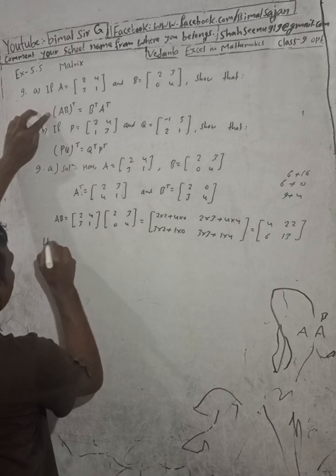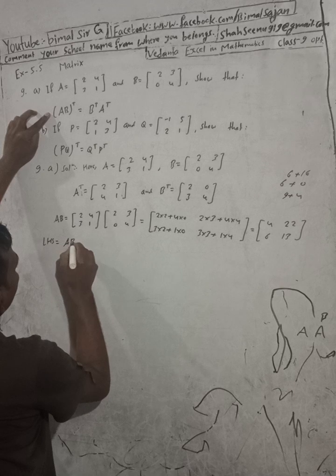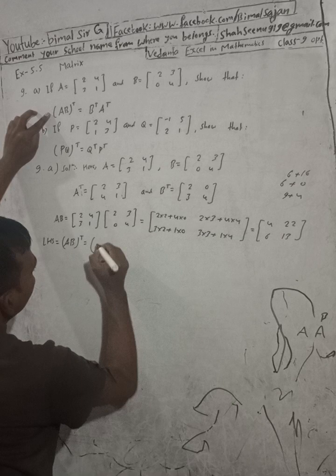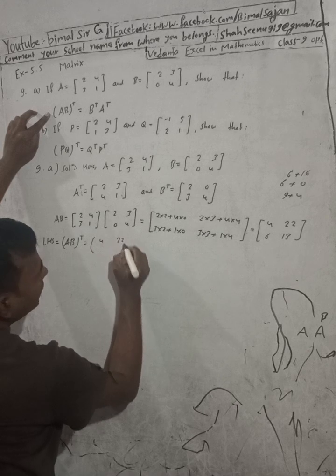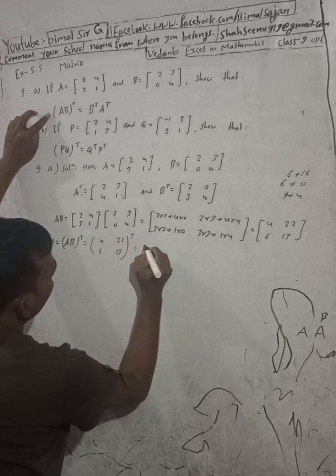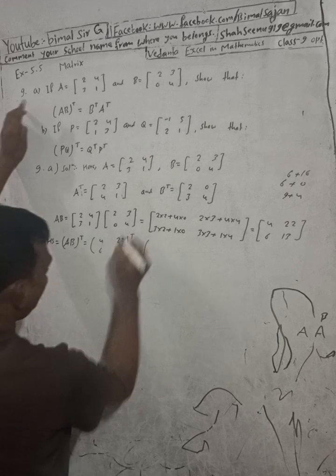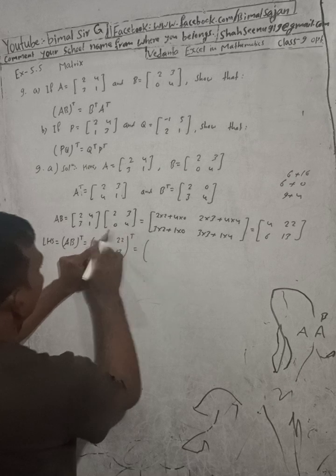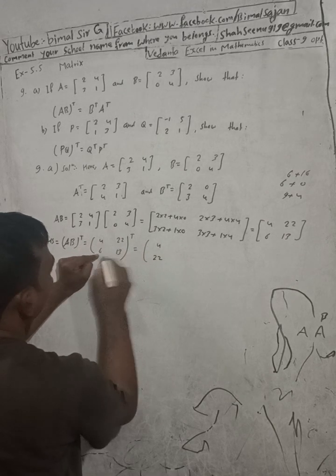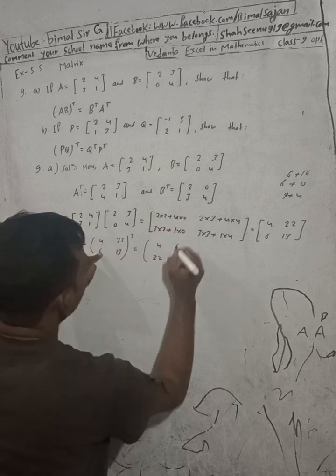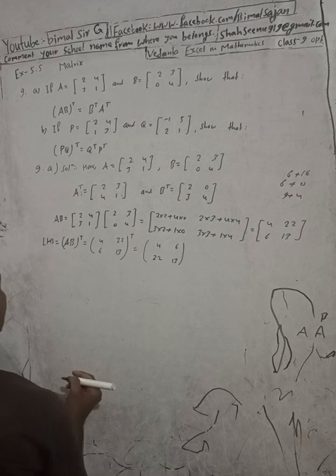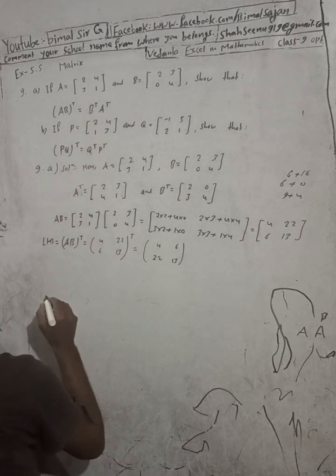Now take LHS: LHS = (AB) whole transpose. AB is [4,22; 6,13]. Transpose means interchange rows and columns, so first row [4,22] becomes first column and second row [6,13] becomes second column. LHS = [4,6; 22,13].